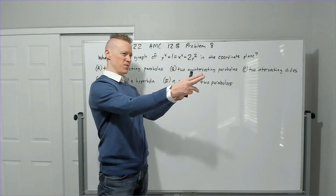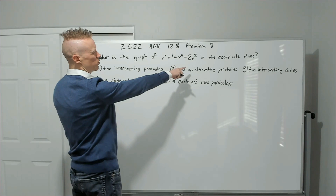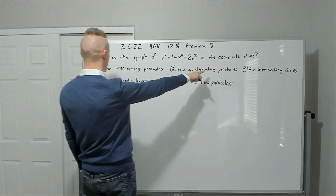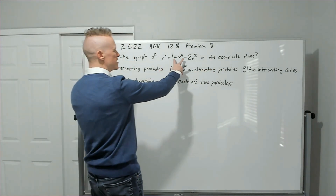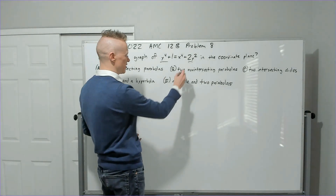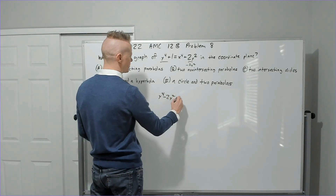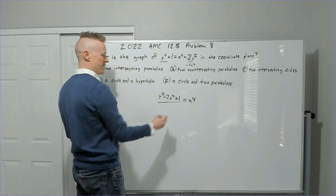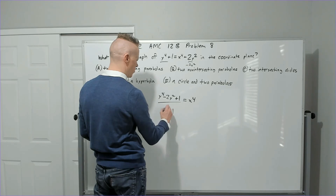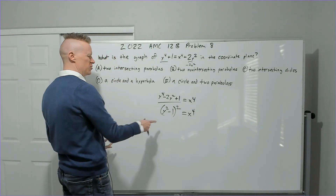Let's quickly do 2022 AMC 12B problem 8. We have an equation involving y and x; looking at the graph in the coordinate plane. Moving y terms together: subtract 2y² to the other side, then factor — you get (y² − 1)² = x⁴.